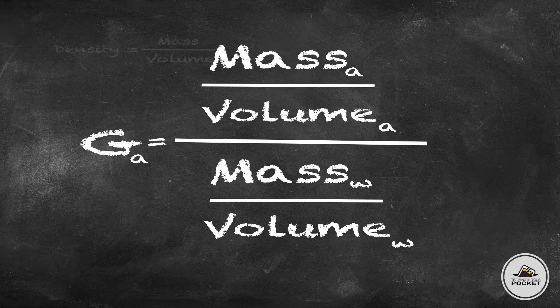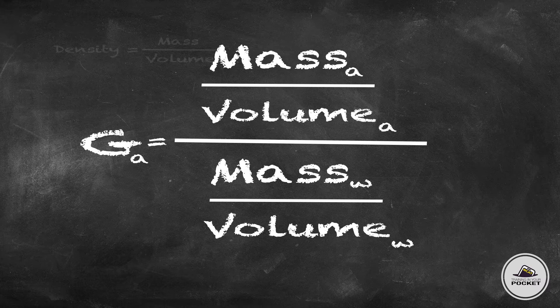So specific gravity of a material is just its density divided by the density of water. So let's say the mass of an asphalt mixture over its volume divided by the mass of water over its volume. It's quite a mouthful, isn't it?